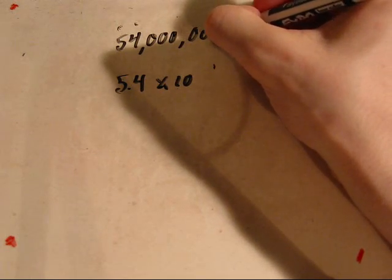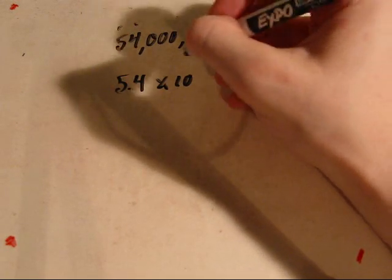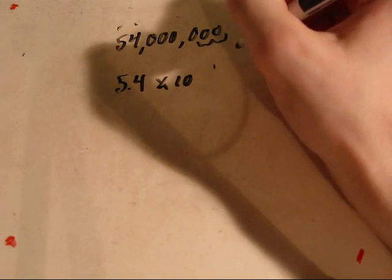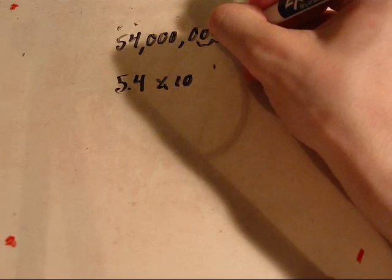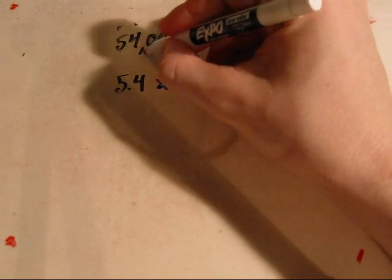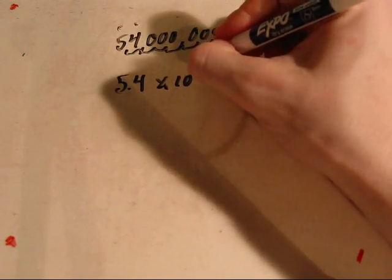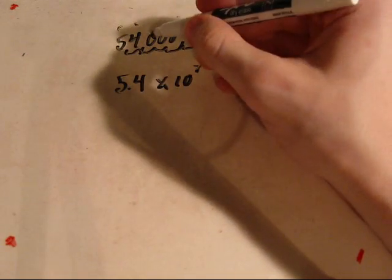You'd use the distance of the decimal point to move. For example, if it's moving left, you're going to use a positive exponent. If it's moving right, it's going to use a negative exponent. Here it's 1, 2, 3, 4, 5, 6, 7. So 5.4 times 10 to the seventh power equals 54 million.